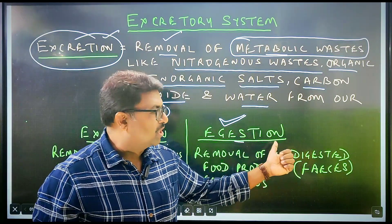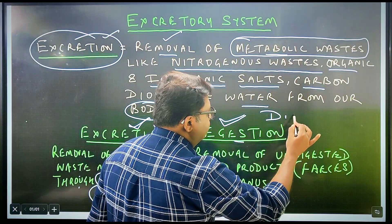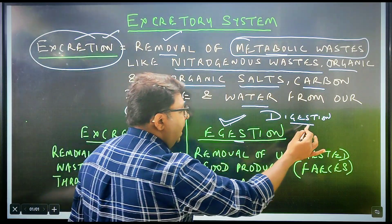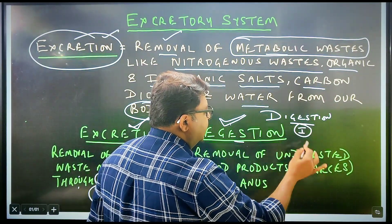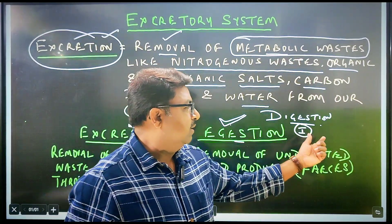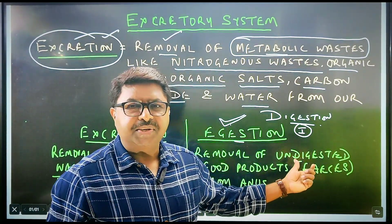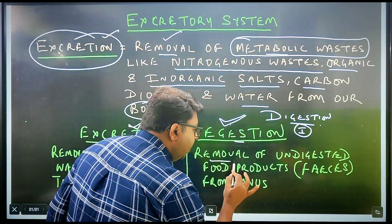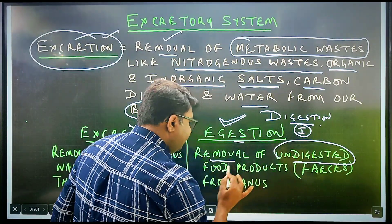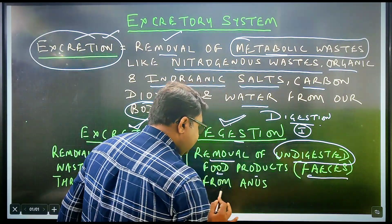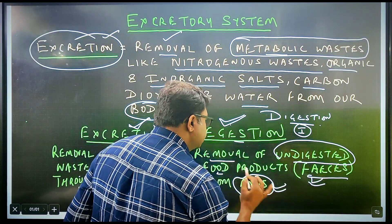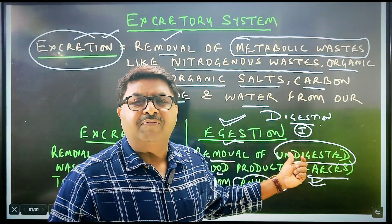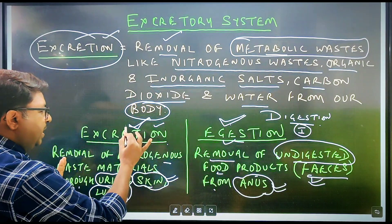Now when will we talk about egestion? What is the first step of nutrition? The first step is ingestion, the second is digestion, the third is absorption, the fourth is assimilation, and the fifth step is egestion. Egestion is the removal of undigested food products — that is feces — from the anus. The process of removing feces from the anus is called egestion. In egestion, it is undigested food products that are removed, not nitrogenous waste. So this is the major difference between excretion and egestion.